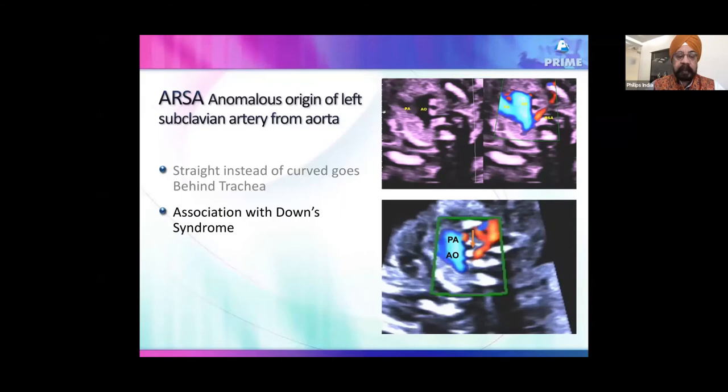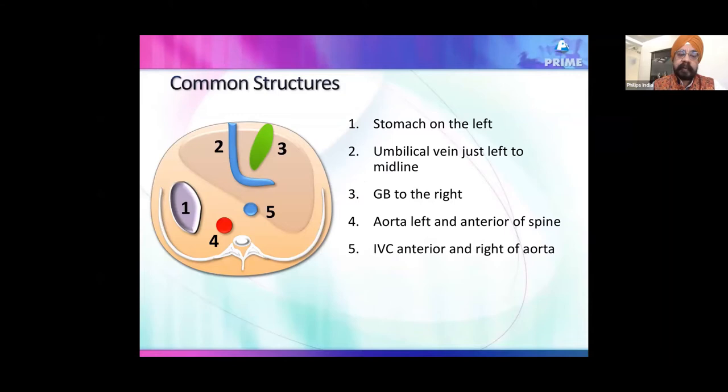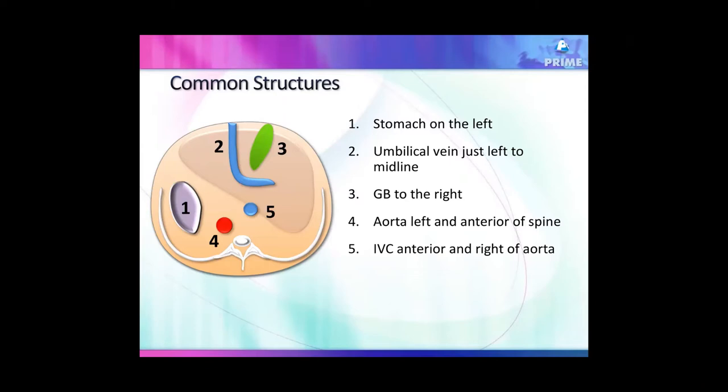In fetal echo, the abdominal view is also important. You can see the umbilical vein, IVC, ductus venosus, stomach, and liver. The liver occupies about 80% of the space, making it difficult to determine whether it is central, left, or right-sided. The liver is used as a sign of isomerism in fetal cardiac assessment.